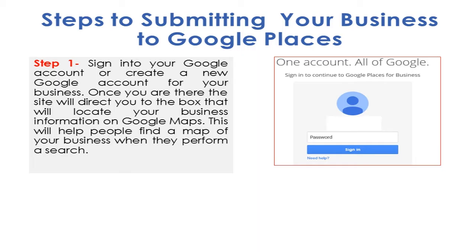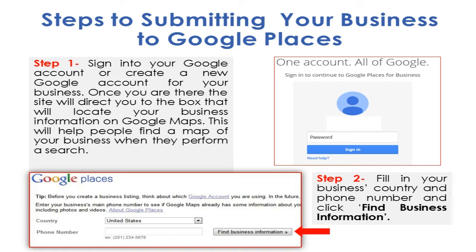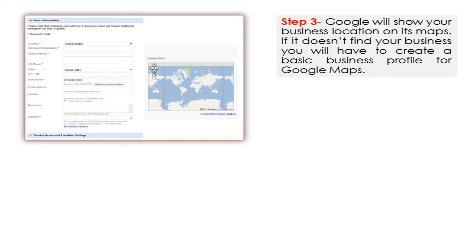They're going to ask for your business information and your business address, then show you how it looks on the map. Step two: fill in your business country and phone number and click 'Find Business Information.' When you do that, Google will show your business location on its maps. If it doesn't find your business, you'll have to create a basic business profile for Google Maps — all that means is just filling in your basic information as you can see here.